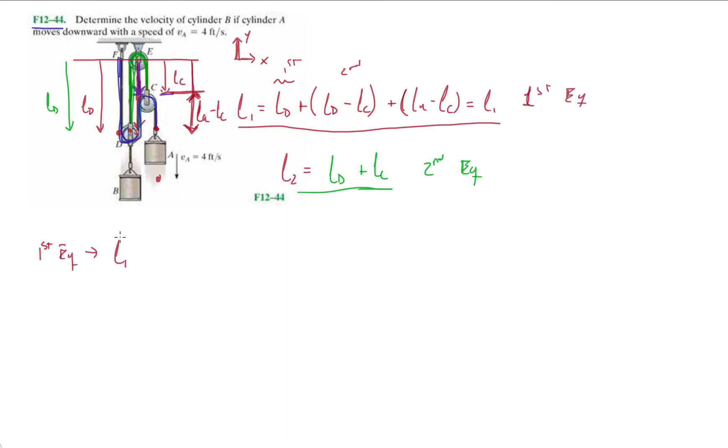Okay. So this is l one prime, right? So l one is constant. So it's zero equals vd, right? Plus vd minus vc plus va minus vc equals zero. Okay.